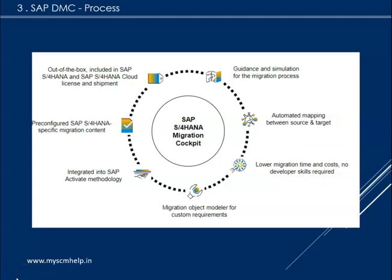The SAP Data Migration Cockpit is out-of-the-box, included in both SAP S/4 HANA and the S/4 HANA cloud environment. It is licensed and shipped as part of S/4 HANA itself — no separate licenses are needed. It has clear documentation and a simulation process. There is also automated mapping between source and target, unlike the LSMW era where manual mapping activities were required. The migration time is claimed to be less, and only basic functional knowledge is needed — no exclusive technical or developer skill sets are required.